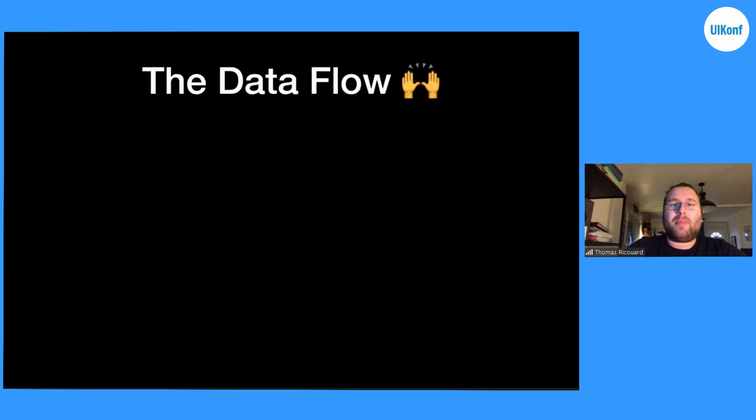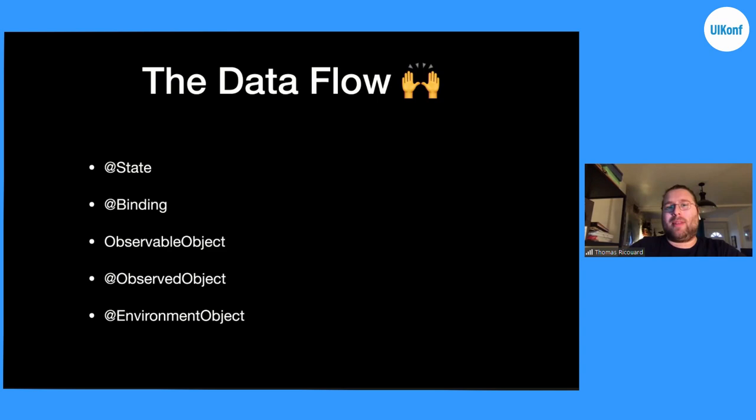The SwiftUI dataflow is composed of a few property wrappers. There is a State property wrapper, Binding, there is one protocol called ObservableObject, and then more property wrappers: ObservedObject and EnvironmentObject. We'll begin with the first one, State.